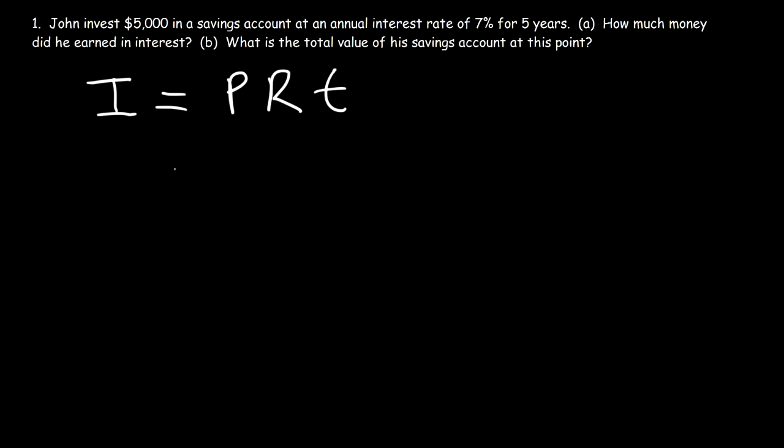I is the total interest received, which is what we're looking for. P is the principal, that's how much money he invests in the account, which was $5,000. R is the annual interest rate, which is 7%, but in the form of a decimal. The decimal form of 7% is 7 divided by 100, which turns out to be 0.07. And T is the time in years. So T is 5 years.